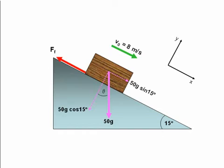I'm now going to resolve the weight vector into two components, one along the slope and one perpendicular to the slope. So along the slope we have 50g sin 15 degrees, and perpendicular to the slope we have 50g cos 15 degrees.